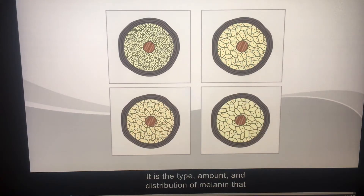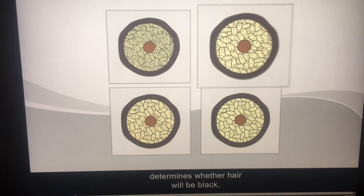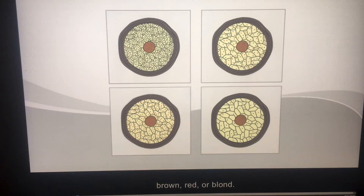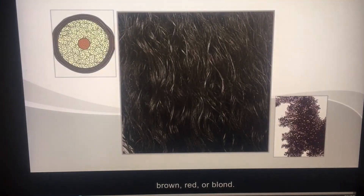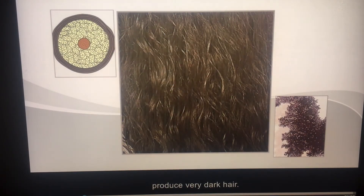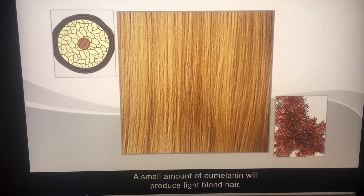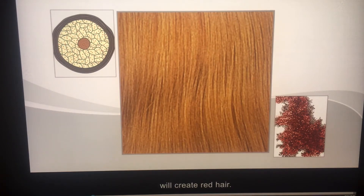It is the type, amount, and distribution of melanin that determines whether hair will be black, brown, red, or blonde. A dense concentration of eumelanin will produce very dark hair. A small amount of eumelanin will produce light blonde hair, while a predominant amount of phaomelanin will create red hair.